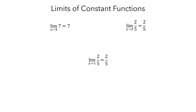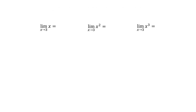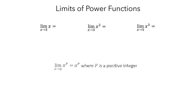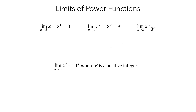Let's look at limits of power functions next. All three of these limits involve taking the limit of x to some power. The power law says that the limit as x approaches a of the function x to a power p is equal to a to the power p, where p is an integer. For all of these limits, the value of a is again 3, so the value of all of these limits must be of the form 3 to the p. For the first example, p is 1, so the limit is 3 to the first power, which equals 3. For the second example, p is 2, so the limit is 3 squared, which equals 9. For the third example, p is 3, so the limit is 3 cubed, which equals 27.